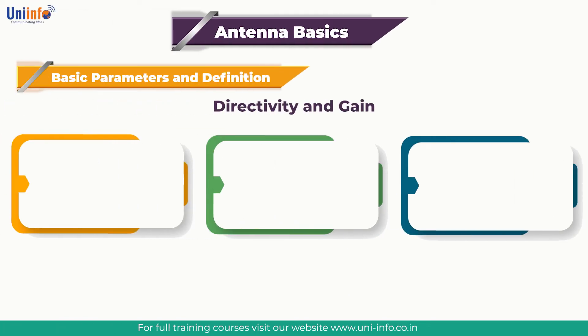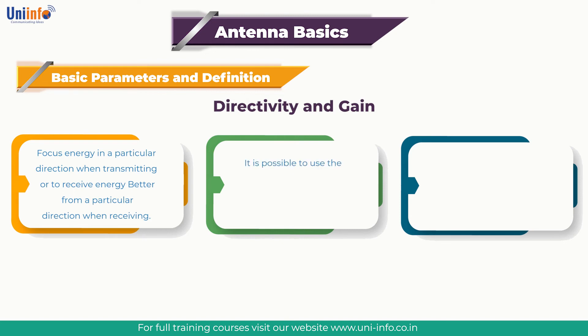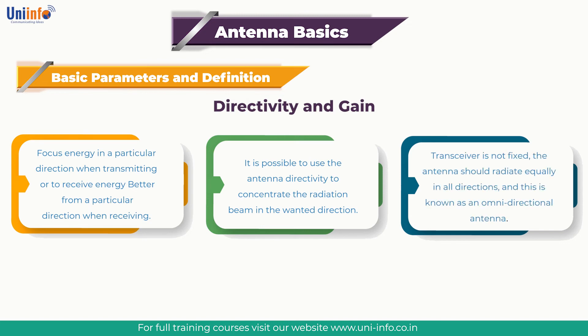Different types of antennas have different bandwidth limitations. Directivity is the ability of an antenna to focus energy in a particular direction when transmitting, or to receive energy better from a particular direction when receiving. In a static situation it is possible to use antenna directivity to concentrate the radiation beam in the wanted direction. However, in a dynamic system where the transceiver is not fixed, the antenna should radiate equally in all directions — known as an omnidirectional antenna.